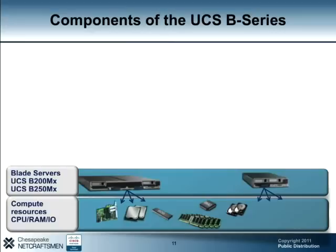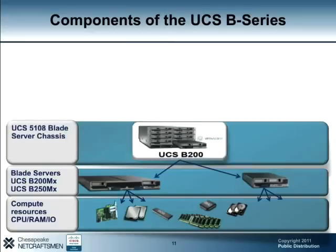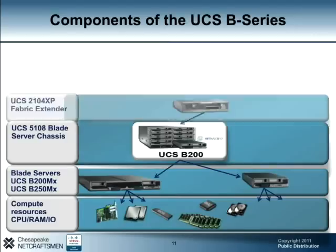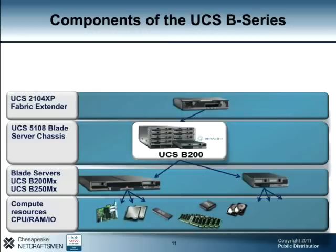The blade server comes in two form factors: a half blade model and a full blade model. The half blade server is a two-socket blade server that utilizes a single slot in the UCS blade server chassis. The full blade server is a two-socket extended memory blade server that utilizes two slots. The UCS 5108 blade server chassis is a modular chassis which can house up to eight half blade servers or four full blade servers. This chassis can also house one or two fabric extender modules.